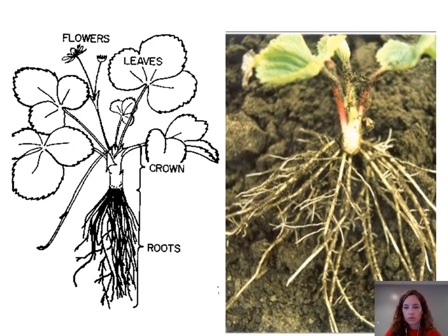To start off we'll go over the growth and development of a strawberry plant. The plant is made up of the crown from where the leaves, runners, branch crowns, flower trusses, and roots grow. The roots grow about four to six inches deep into the soil. The leaves each have three leaflets and this is the runner from where the daughter plants grow, and is how strawberries are propagated.